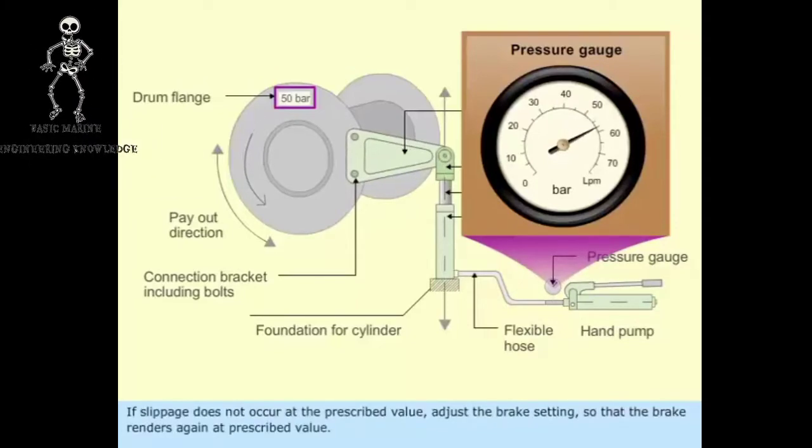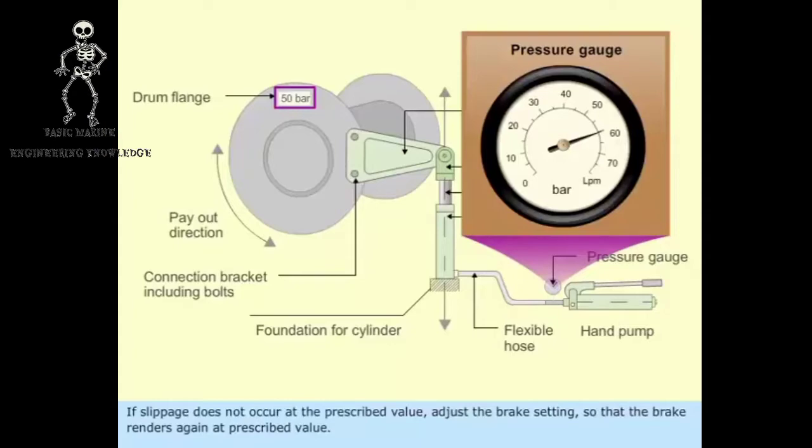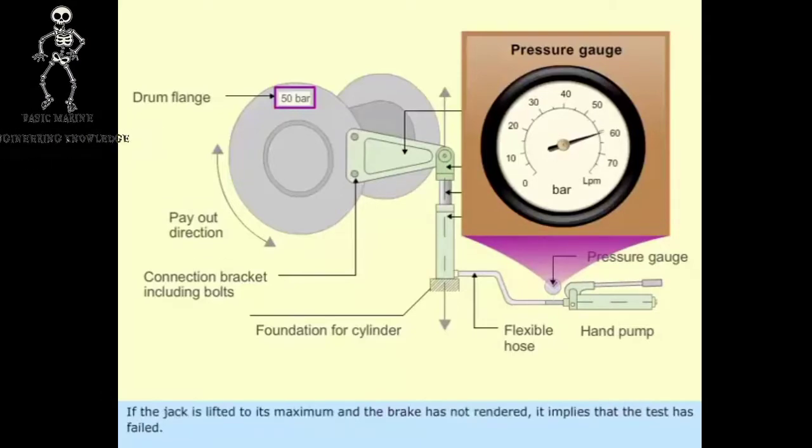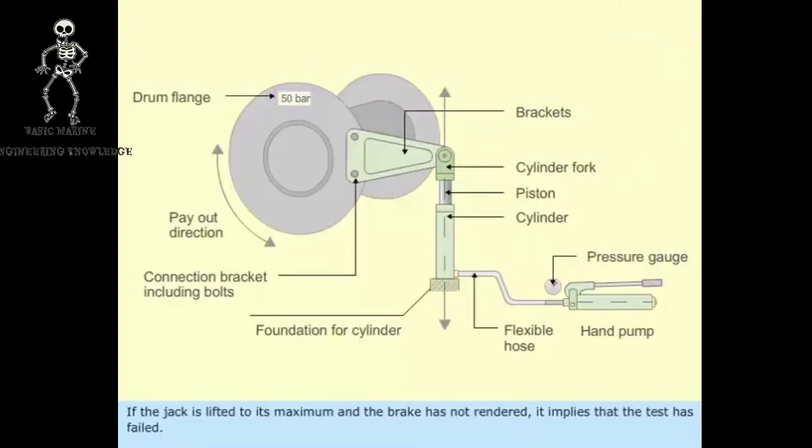If slippage does not occur at prescribed value, adjust the brake setting so that the brake renders again at prescribed value. If the jack is lifted to its maximum and the brake has not rendered, it implies that the test has failed.